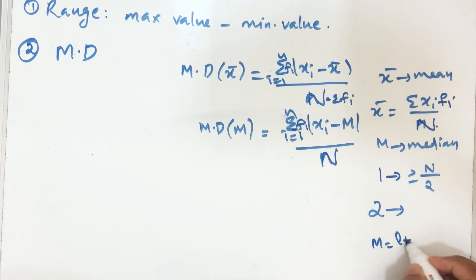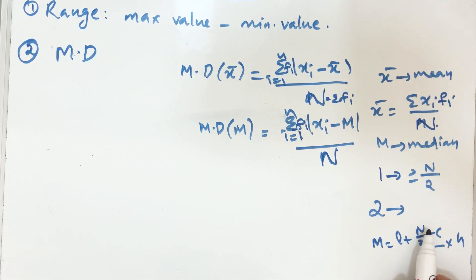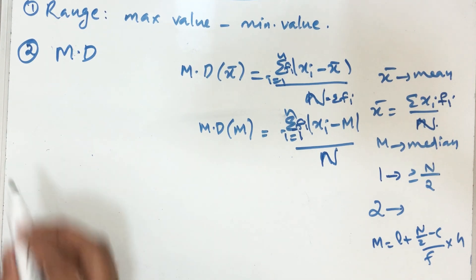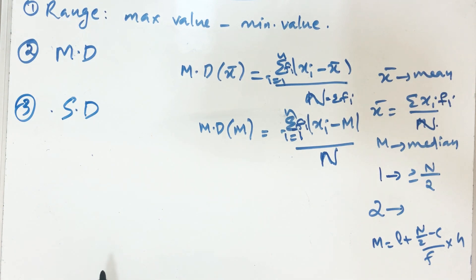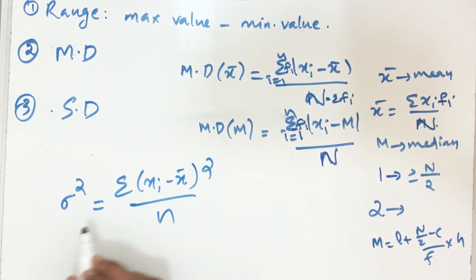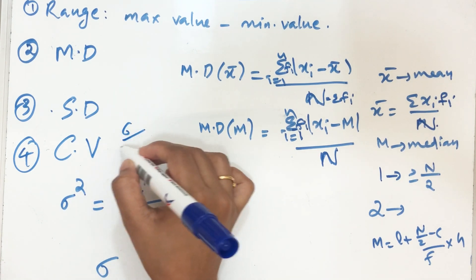For continuous frequency distribution, the median formula is: M = l + (N/2 − c)/f × h, where l is the lower limit of the median class, f is its frequency, h is the class width, c is the cumulative frequency of the class preceding the median class, and N is the total frequency. For grouped data, xᵢ are the mid-values of each class interval. Variance for ungrouped data = Σ(xᵢ − x̄)²/n; for grouped data = Σfᵢ(xᵢ − x̄)²/N. Standard deviation σ is the positive square root of variance. Finally, coefficient of variation = σ/x̄ × 100.